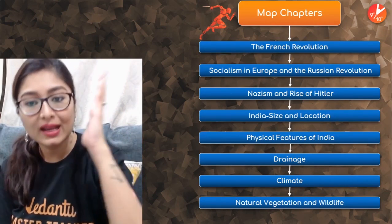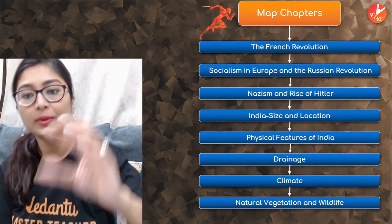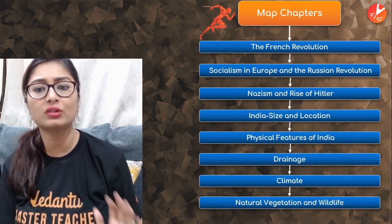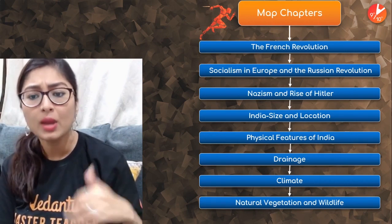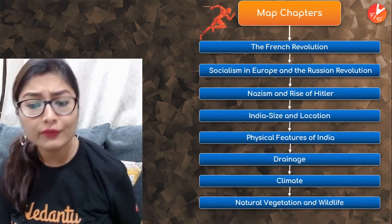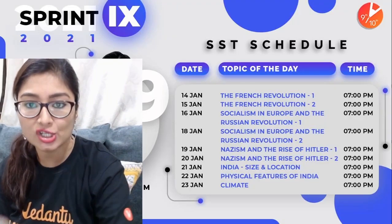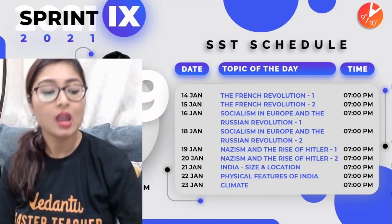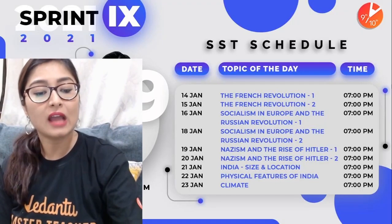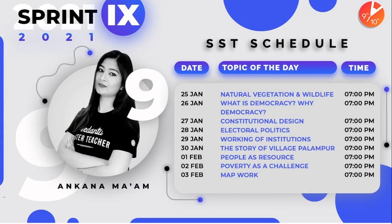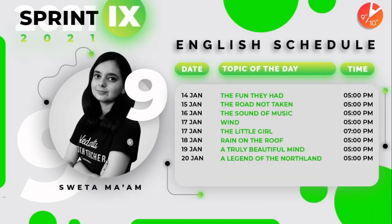Every chapter — whether French Revolution, Socialism in Europe, Russian Revolution, Nationalism, and Geography chapters — everything is going to be finished today. Let's note one more time on the sprint schedule: today is the last session, and we have done so much for social science, English, Maths, Physics, Chemistry, and Biology.